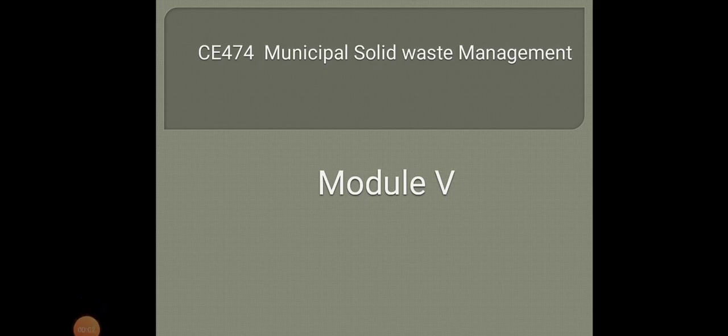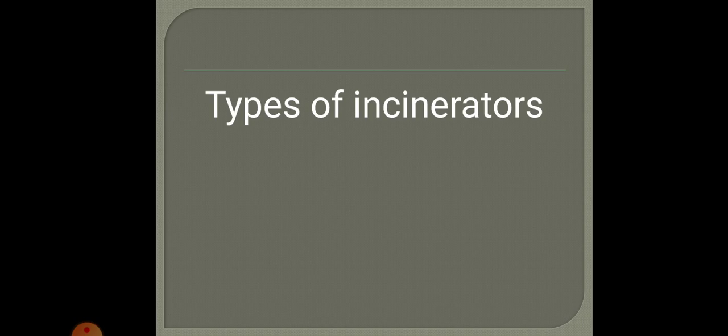Welcome, dear students. In the last class we discussed the incineration process, objectives of incineration, and the parts of an incinerator. Incineration is the process of burning waste in large furnaces at very high temperatures, mainly used to dispose of solid, liquid, and gaseous waste. The main objectives are volume reduction, stabilization, sterilization of waste, and energy recovery. An incinerator consists of three components: the furnace chamber, the heat recovery boiler, and the flue gas treatment plant.